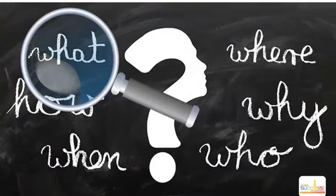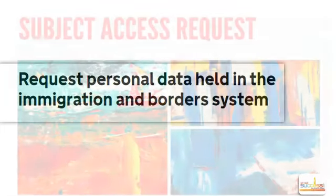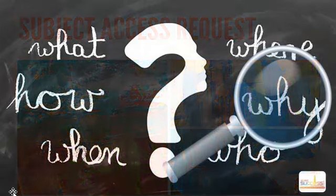Requesting personal information which the home office holds on you is also known as making a subject access request. The right to access — also referred to as data subject access — is one of the most fundamental rights in data protection laws around the world. It is a written request to a company or organization asking for access to the personal information it holds on you. You have a legal right to request your file not only from the home office but from almost any company or organization in the UK or in the world, free of charge in most circumstances.